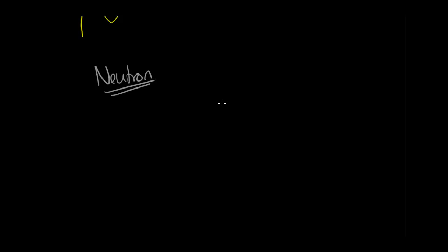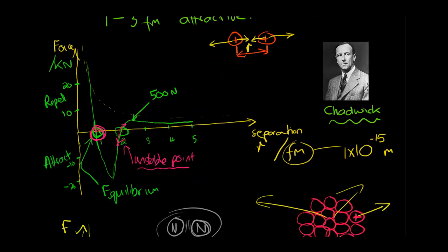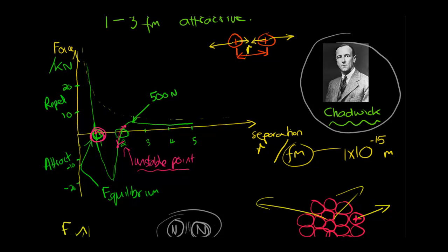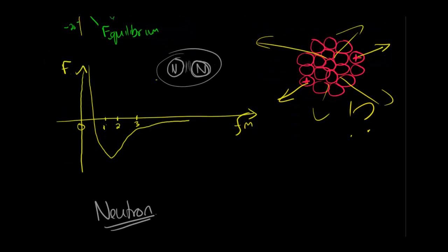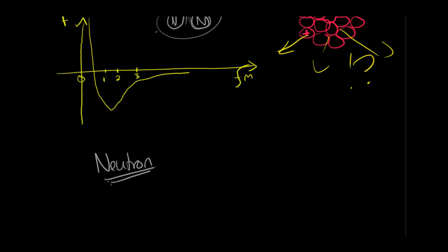The neutron was discovered in the 1930s by a chap called Chadwick. He worked alongside several other scientists who were investigating bombarding materials with alpha particles and they found that a neutrally charged particle was emitted and further experiments led to the identification of the neutron. It has approximately the same mass as a proton.